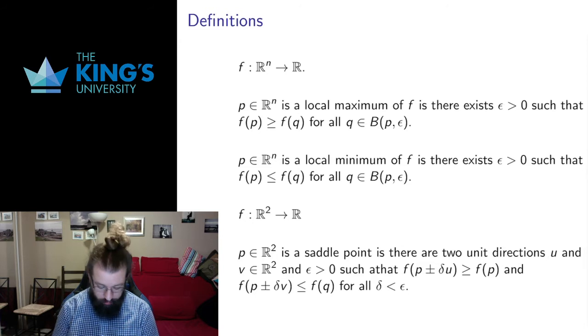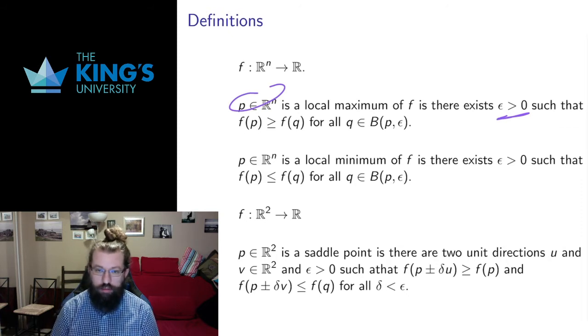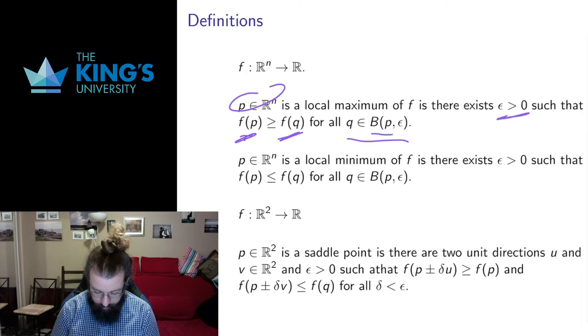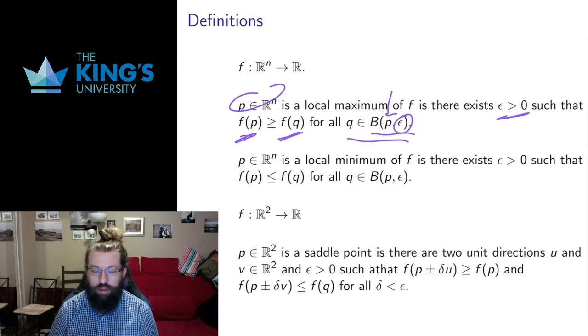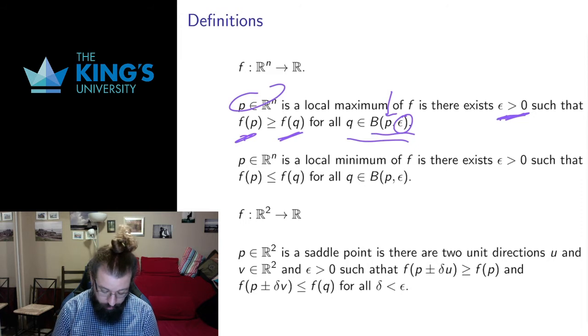So a point p in the domain is a local maximum if there's some small number epsilon, that's going to be the local part of the local maximum, such that the function value is larger than all nearby values. The way I say nearby values is to use this notation, this B(p, epsilon) is notation for the ball centered at p with radius epsilon, which is all nearby points, all points that are within the distance epsilon of the center point p.